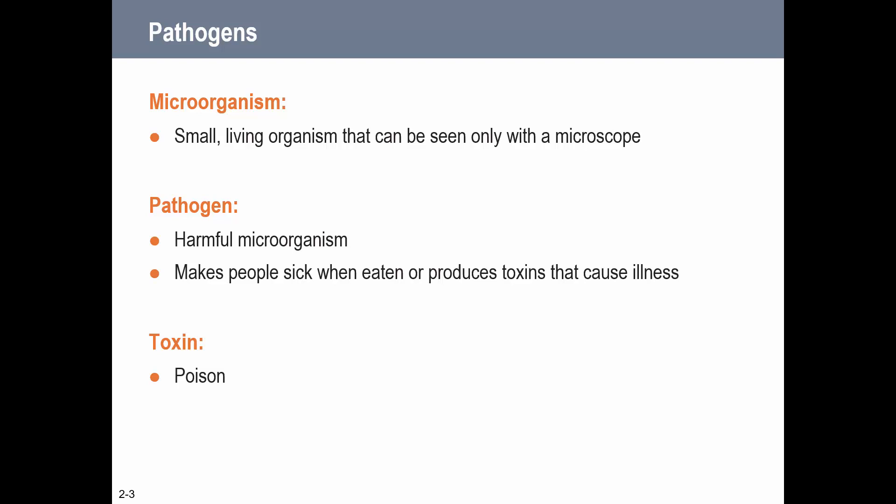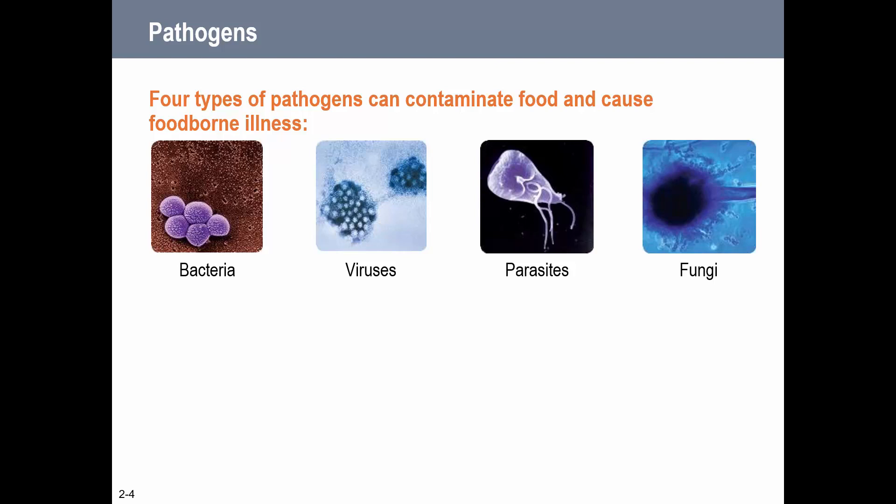Microorganisms are small living organisms that we can only see with a microscope - I can't look at my beef and see how much E. coli is on there just by looking at it. A lot of these microorganisms may not be harmful; we have many bacteria in our body and world that are beneficial. But when a microorganism is harmful and can make people sick, that is considered a pathogen. A toxin is really a poison - some bacteria can produce toxins, and some plants can produce toxins. The four types that can contribute to illness are bacteria, viruses, parasites, and fungi.